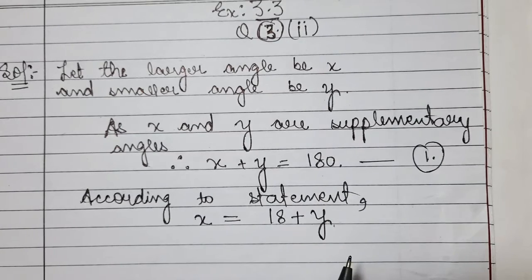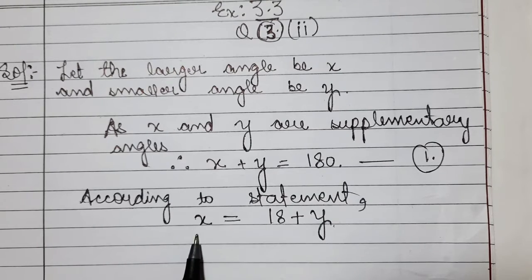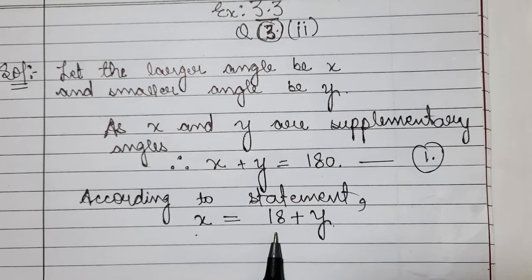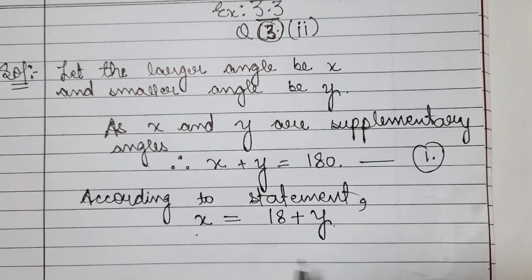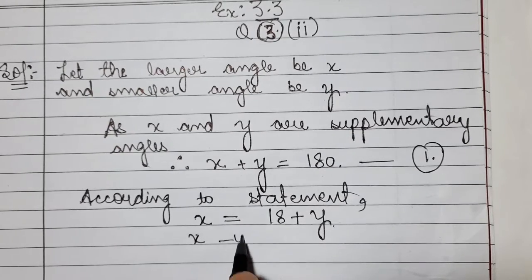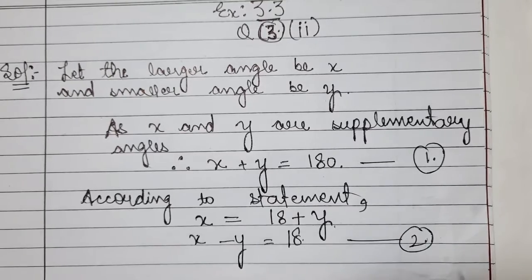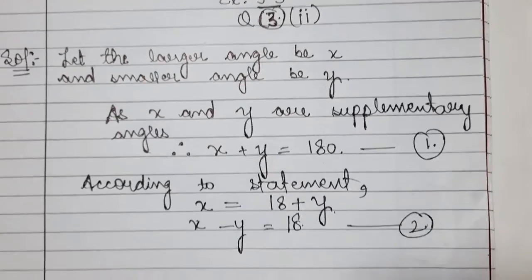The larger of two supplementary angles exceeds the smaller — 'exceeds' means it is greater by 18 degrees. So the larger angle minus the smaller angle equals 18, that is x minus y equals 18. This is our second equation.